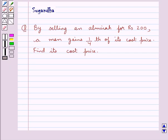Hello and welcome to the session. In this session we discuss the following question which says: By selling an Almira for Rs. 200, a man gains 1/4th of its cost price. Find its cost price.